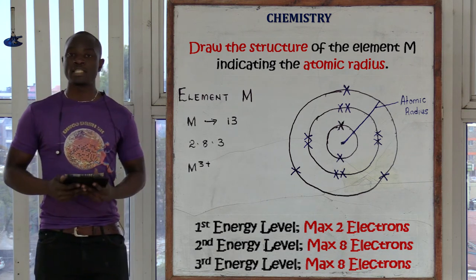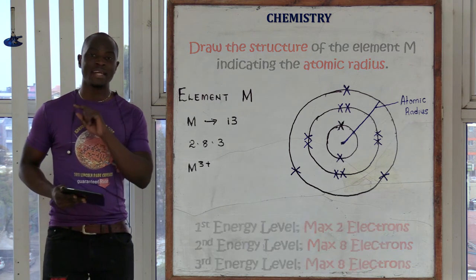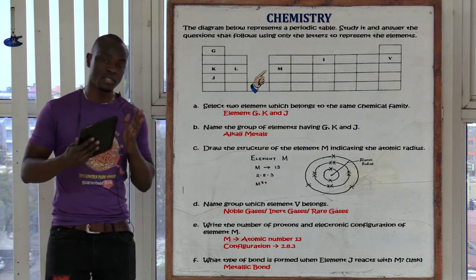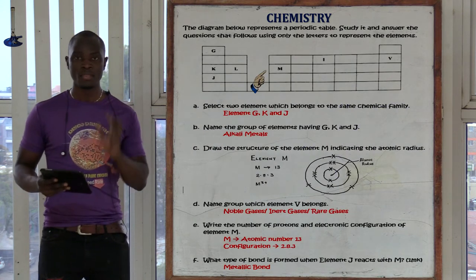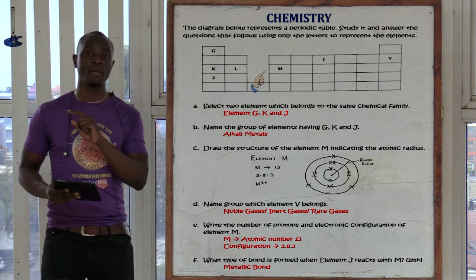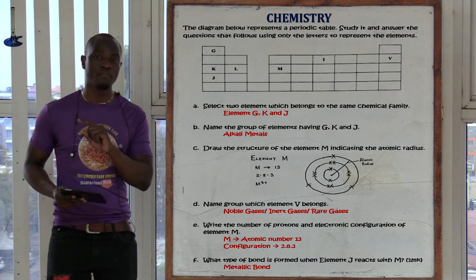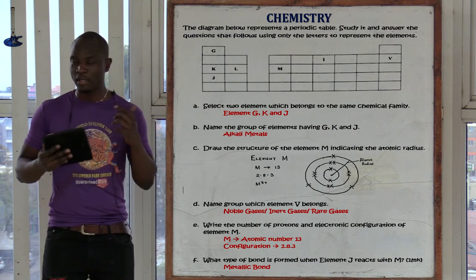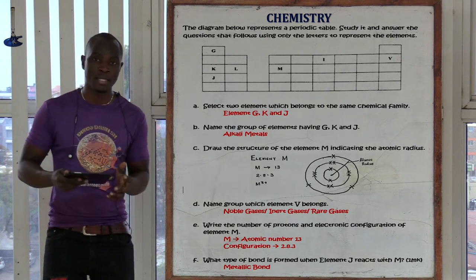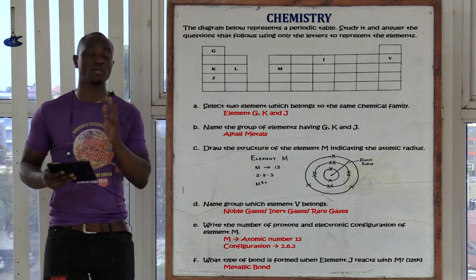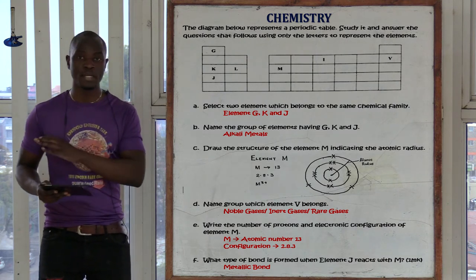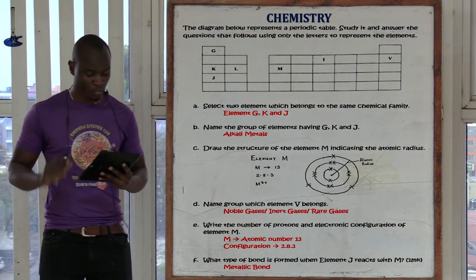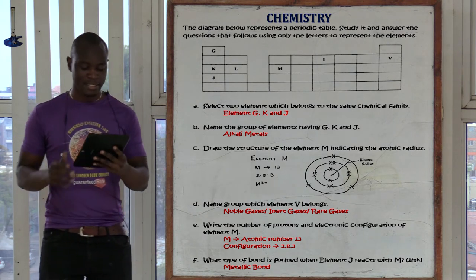We know that element M is aluminium, but never say it is aluminium. Never write the chemical symbol of aluminium in place of M. The periodic table reminder: we have only been told to use the letters given. Even though we know it is aluminium, only use the M that you have been given in the periodic table.